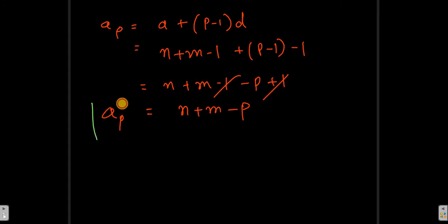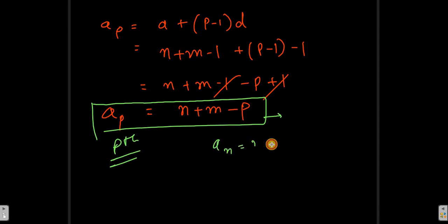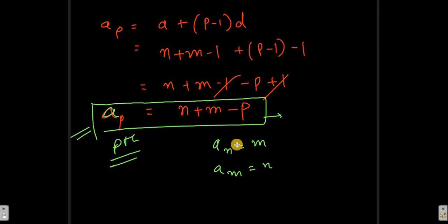So the pth term is n plus m minus p. This means if we know the nth term is m and the mth term is n, then the pth term will be n plus m minus p. The importance of this result is that we don't need a — the first term — or d — the common difference — to find any pth term of this sequence.